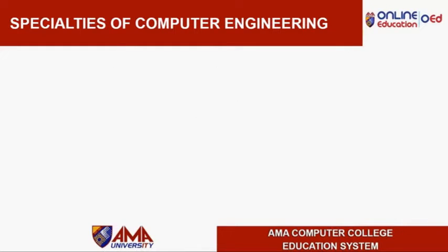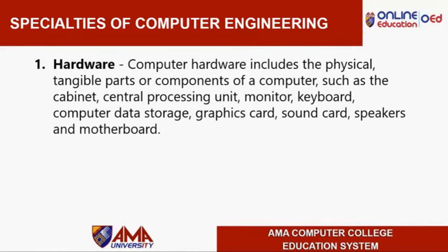There are two major specialties in computer engineering: hardware and software. Computer hardware includes the physical tangible parts or components of a computer, such as the cabinet, central processing unit, monitor, keyboard, computer data storage, graphics cards, sound cards, speakers, and motherboard.